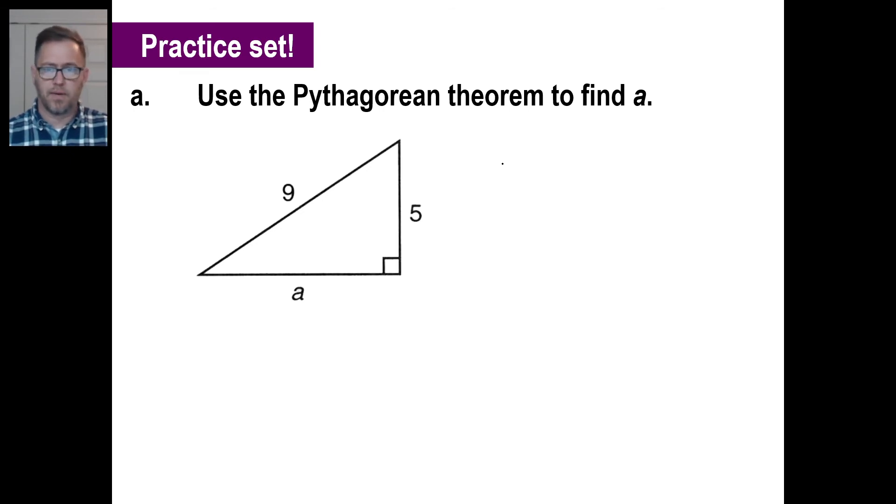Okay, well, let's take a look. We got A squared. We got plus 5 squared. We got equals 9 squared. There we go. So, A squared is equal to 81 minus 25, which is going to be 56. So, A is going to be the square root of 56. That's all there is to it.